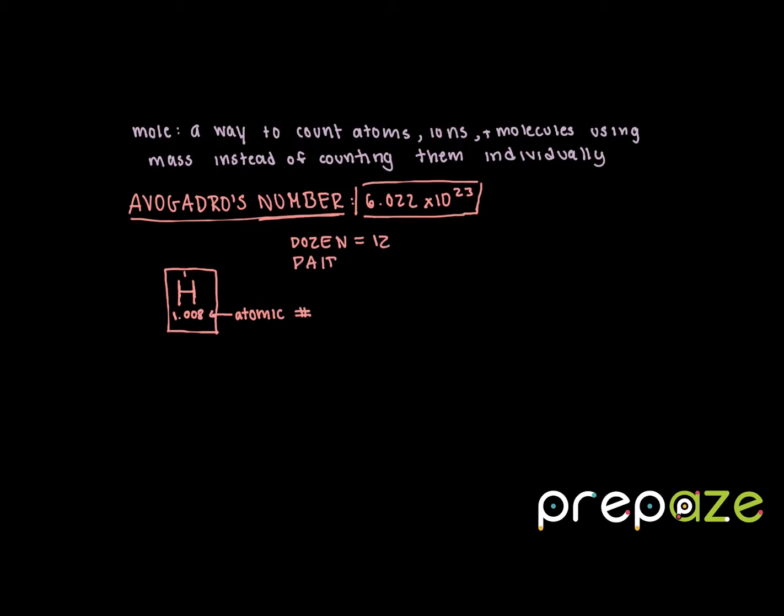A mole is equal to Avogadro's number, which is 6.022 times 10 to the 23rd. And when we're looking at it in a chemistry viewpoint, we're referring to this number as the number of particles that exist.